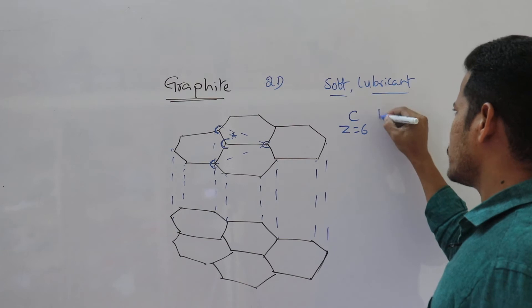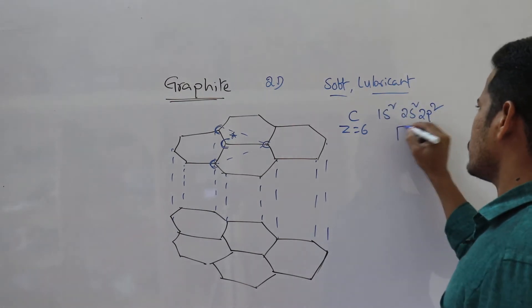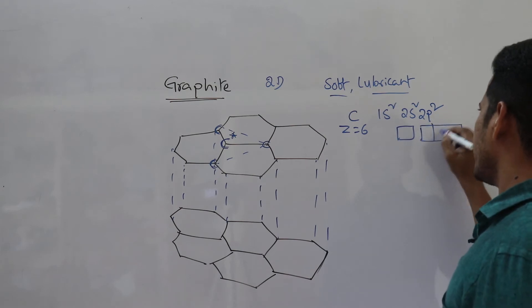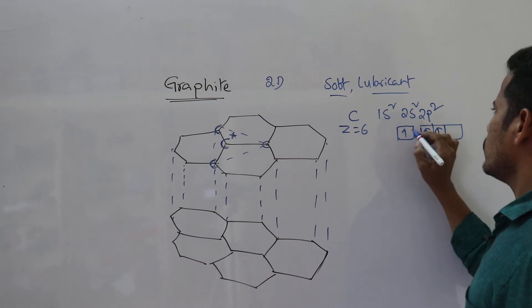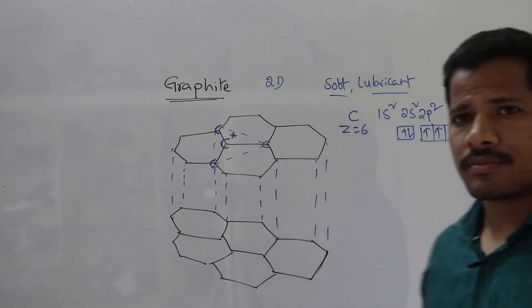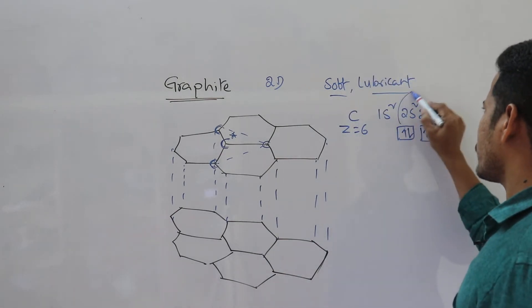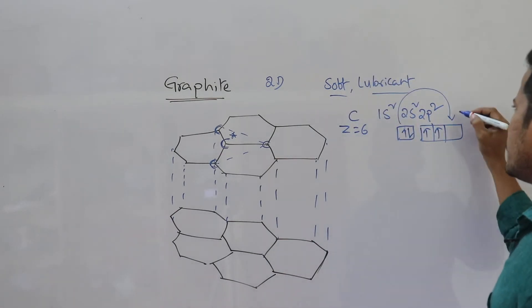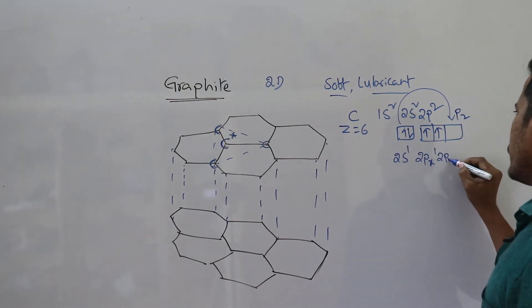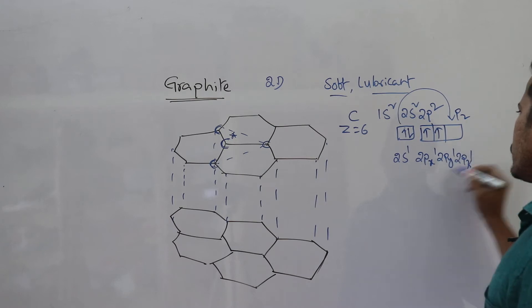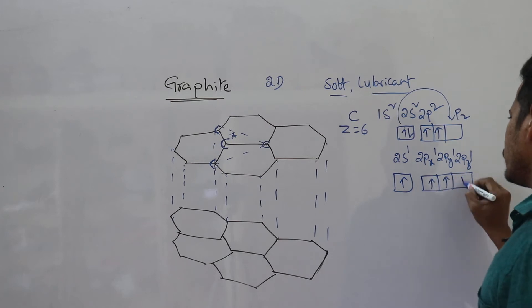Carbon (Z=6) in the ground state has the electronic configuration 1s², 2s², 2p². In the excited state, the 2s electron is promoted to the 2pz orbital, giving 2s¹, 2px¹, 2py¹, 2pz¹. Each carbon has 4 unpaired electrons in the excited state.